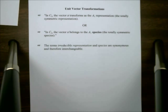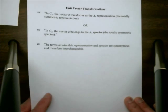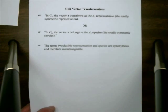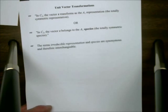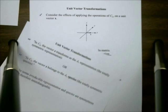Another way of saying the same thing would be to say in C2v, the vector z belongs to the A1 species, the totally symmetric species. The term species is just a shorthand for irreducible representation, which you have to admit is a bit of a mouthful. So I'll go back and forth between calling things irreducible representations and species.